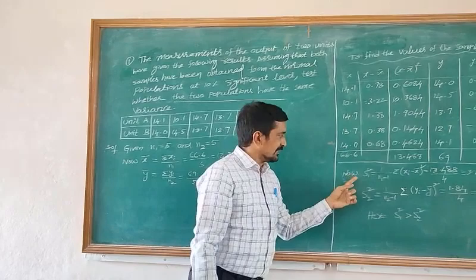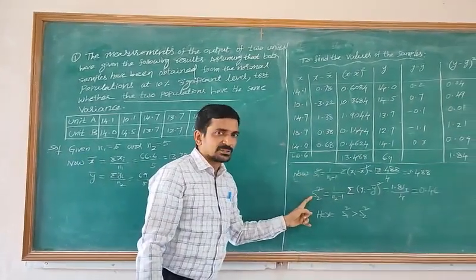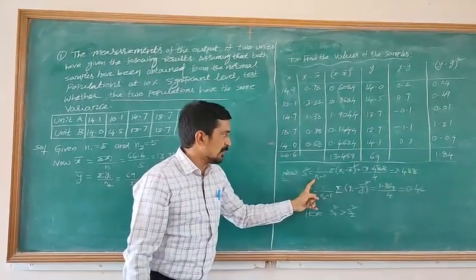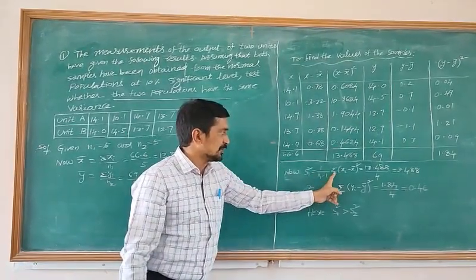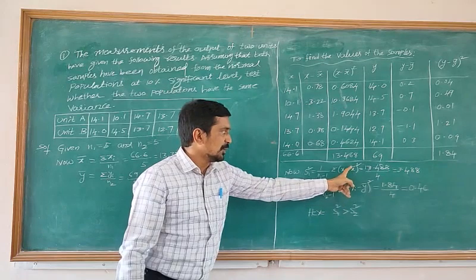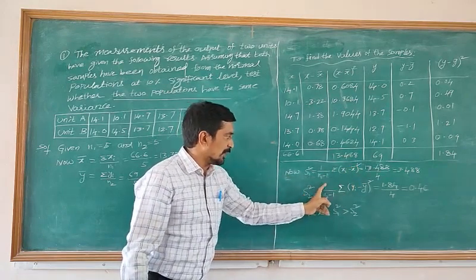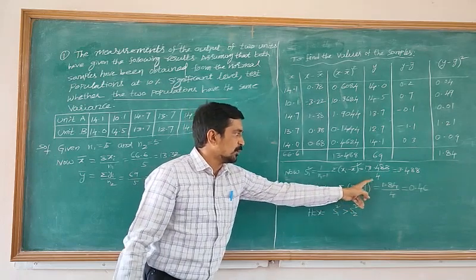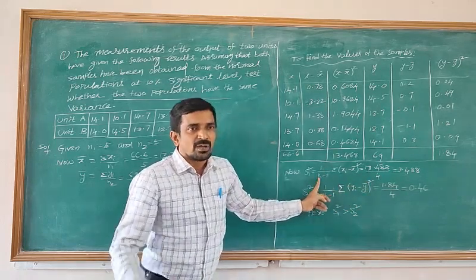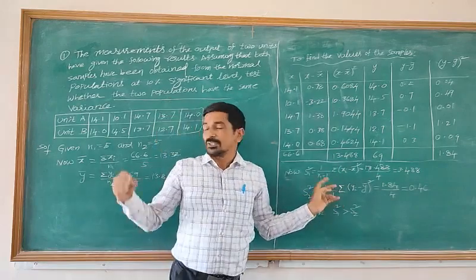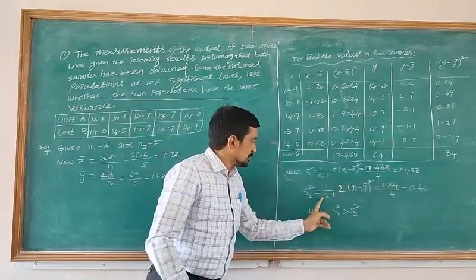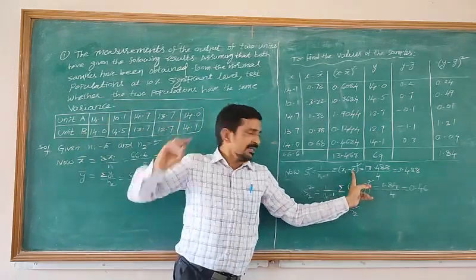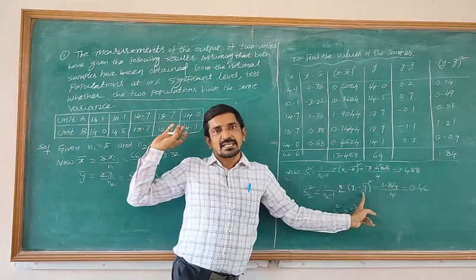We are going to calculate S1² and S2². The formula for S1² is 1 by (N1 minus 1) times the summation of (Xi minus X-bar) whole square. Similarly, S2² equals 1 by (N2 minus 1) times the summation of (Yi minus Y-bar) whole square. Here, N1 and N2 are the number of observations in each sample, X-bar is the mean of the first sample, and Y-bar is the mean of the second sample.